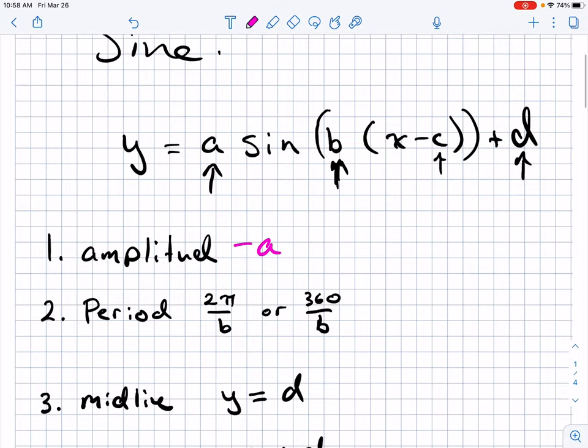To find the period or how far the graph goes before it repeats, we do 2π over b if we're in radians or 360 over b if we're in degrees. B is not the period, but we use it to find the period.